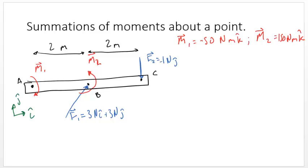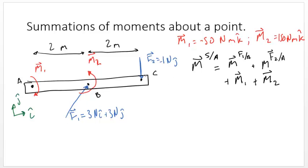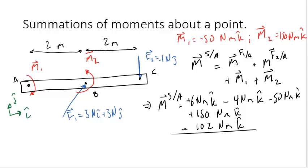In this example we're given a system with multiple loads and want to find the moment about different points. The moment about point A equals the summation of all moments of forces in the system: the moment caused by force one, the moment caused by force two, plus the moment couple acting at A. For the moment couple acting at B — remember that a moment couple is independent of the point about which it acts — therefore the moment due to M2 at any point equals M2 at B, so we add it in. The total moment due to all loads about point A is 102 N·m. As an exercise, calculate the moments about point C and about point B.